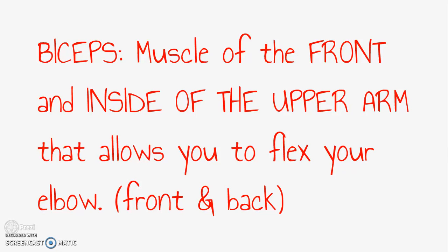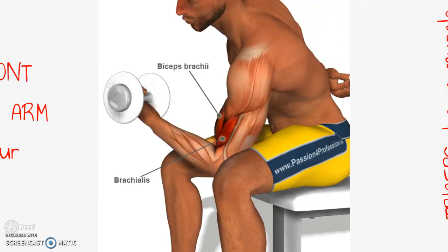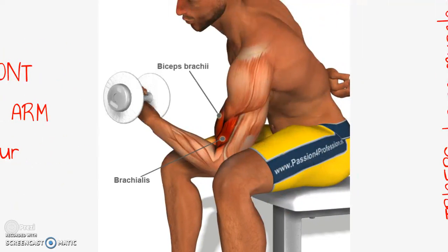The next muscle is the biceps. This muscle should be very familiar to you. Anytime you make a muscle with your upper arm, you're flexing your biceps. This is the muscle of the front and inside of the upper arm. It allows you to flex or bend your elbow. We use the bicep muscles when we are pulling something toward us. You can see the biceps muscles from the front and the back view. This exercise is called concentration curls. It is very effective in helping to shape the peak of the biceps muscle.